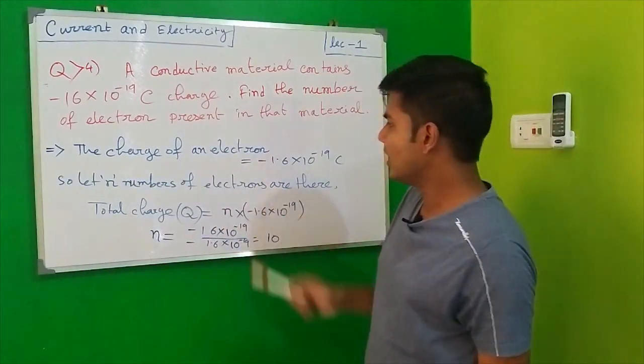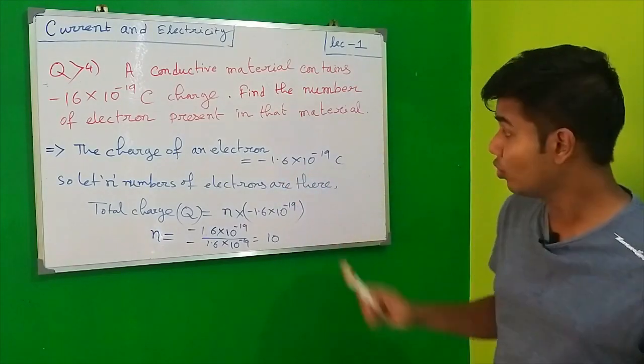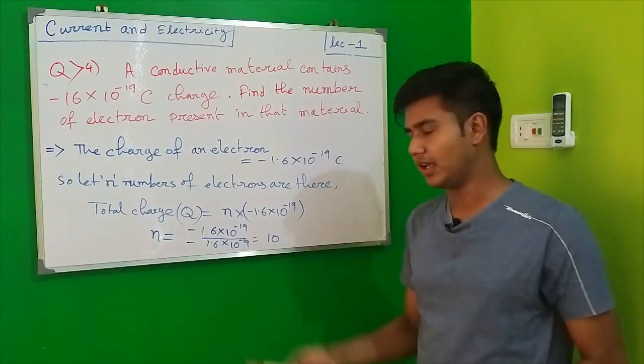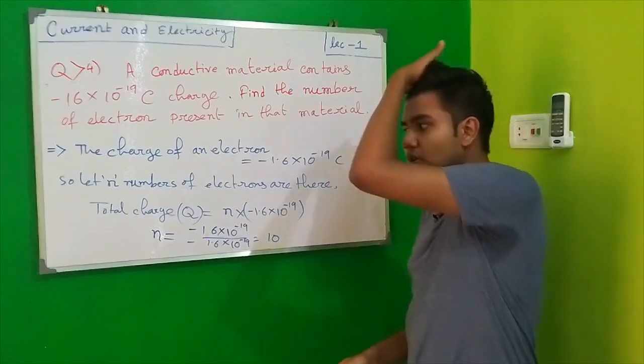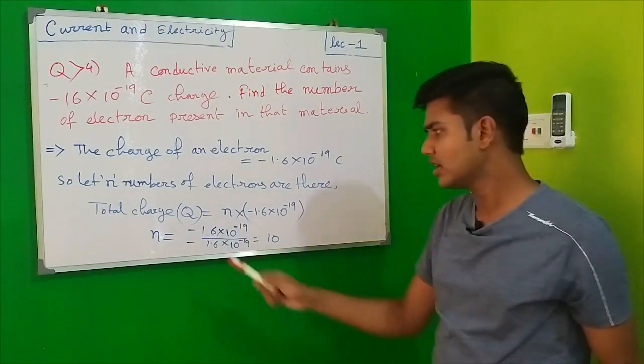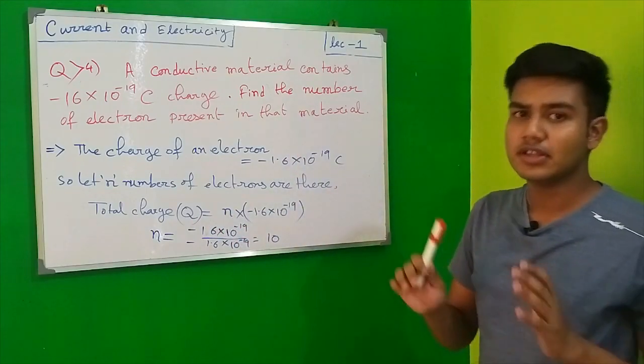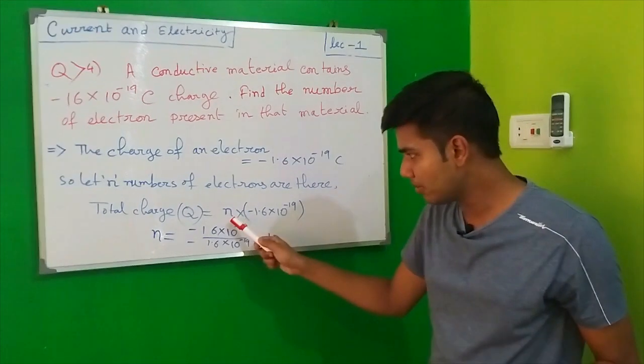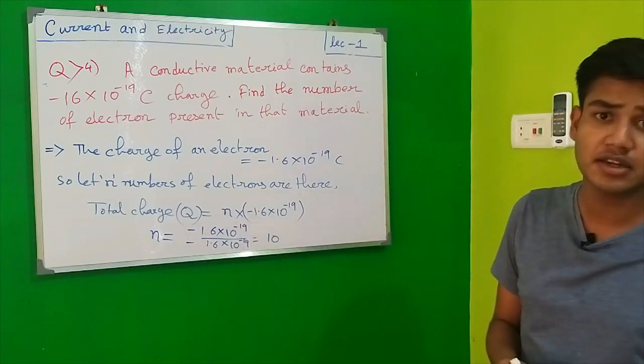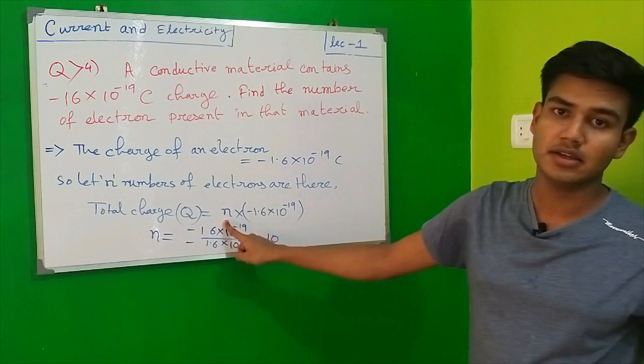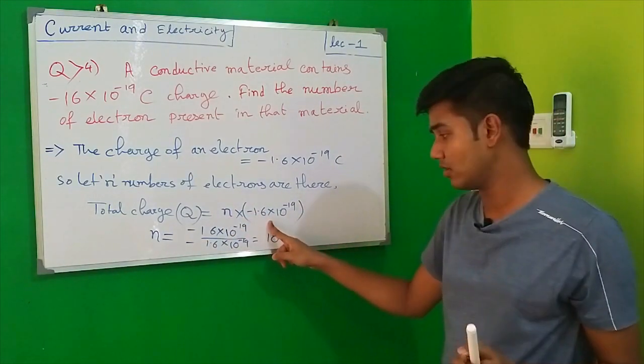The charge of an electron is -1.6 × 10⁻¹⁹ coulomb. Let n be the number of electrons present in that material. Total charge Q equals n times the charge of one electron. For example, if we have two electrons, multiplying 2 by this gives 3.2 × 10⁻¹⁹ coulomb.